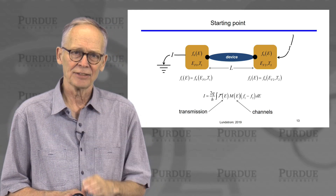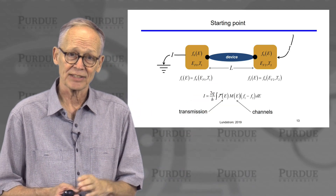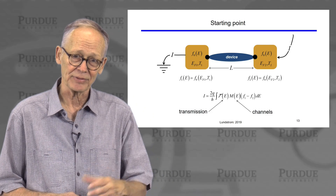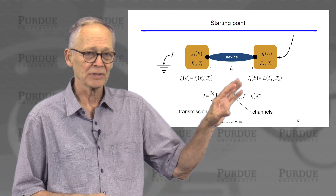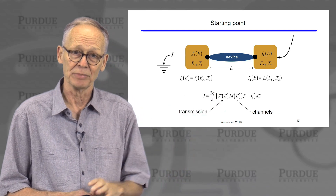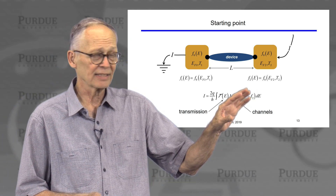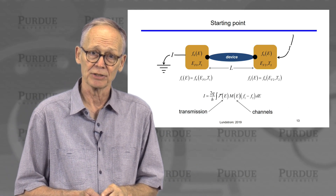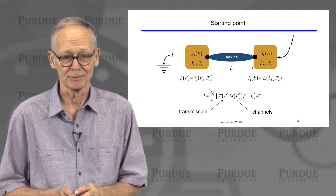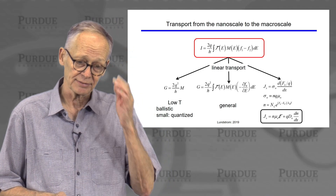M(E) is the number of channels available to conduct current at a given energy. My colleague Ciprio Dada likes to tell his students to think of it like the lanes on a highway that carry traffic flow. Mathematically, M is proportional to the velocity times the density of states — you need a state for the electron to be in, and it must have a velocity. Current does not flow unless there is a difference in Fermi levels between the two contacts; if the Fermi functions are the same, we're at thermodynamic equilibrium. That's the mathematical starting point for everything in the rest of this tutorial.